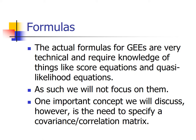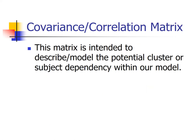The actual formulas for GEEs are very technical and require knowledge of things like score equations and quasi-likelihoods — pretty big-picture theoretical stuff that our applied program overlooks in favor of things more valuable in the workplace. But we can talk about this important idea: if we're going to use GEEs to model dependencies, we need to specify a covariance or correlation matrix. This matrix is a way of describing or modeling the potential cluster or subject dependency within our model.